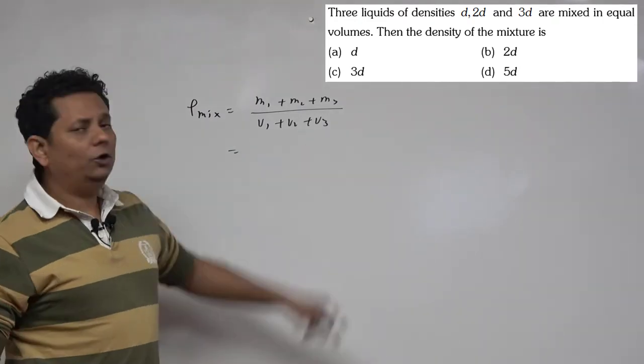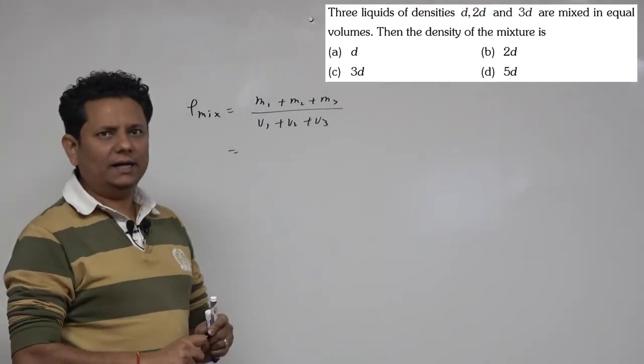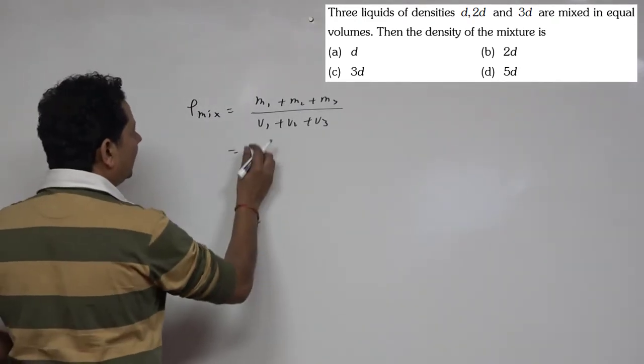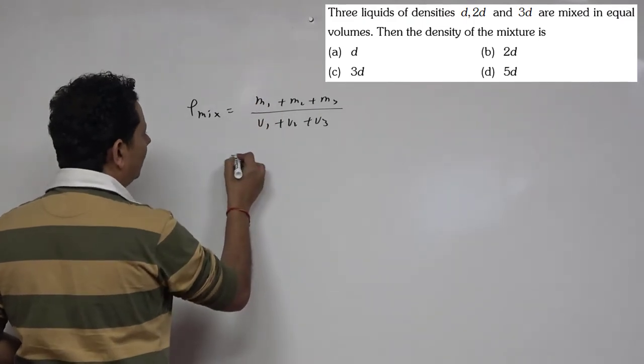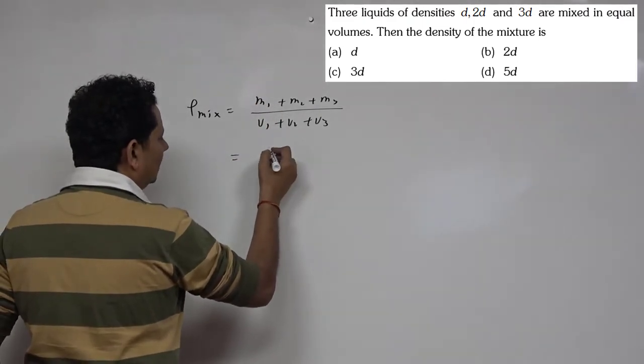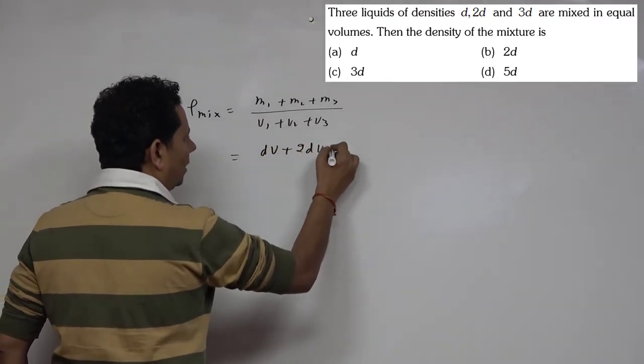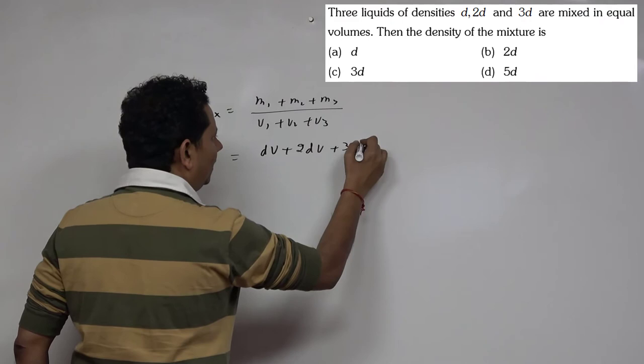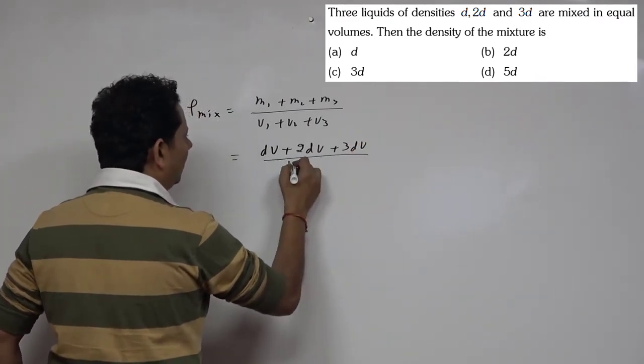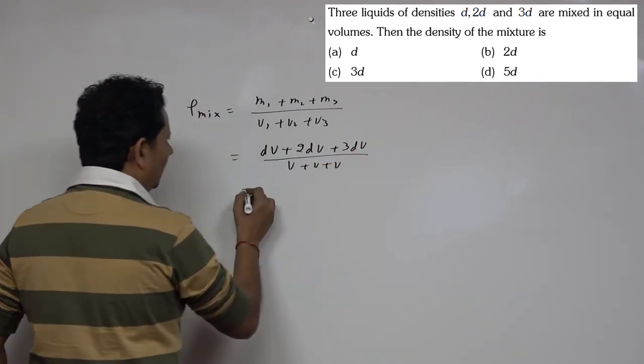Now in this case, we have three different densities. So the first mass m1 we can write as density d multiplied by its volume. The second one's density is 2d multiplied by volume. The third one's density is 3d multiplied by volume, divided by v plus v plus v.